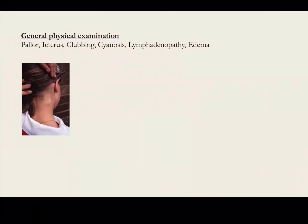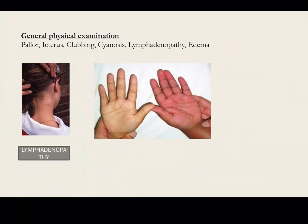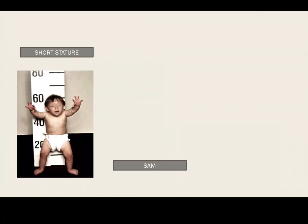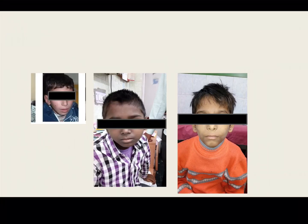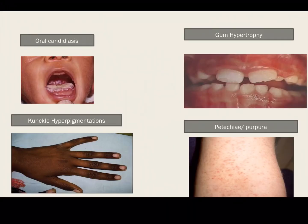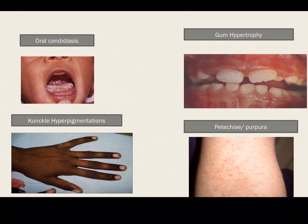On general physical examination, you can find pallor, icterus, clubbing, cyanosis, lymphadenopathy, and edema. Findings of short stature or severe acute malnutrition point towards a nutritional cause or failure to thrive due to chronic infections. Typical facial features seen in the pictures — peculiar bird face, flat facial profile, microcephaly, frontal bossing, short low hairline, webbed neck, epicanthal folds, and small eyes — are suggestive of Fanconi anemia, a type of bone marrow failure syndrome. Other pointers include oral candidiasis suggestive of HIV, gum hypertrophy suggesting leukemia, knuckle hyperpigmentation as a sign of B12 deficiency/megaloblastic anemia, and purpura and petechiae suggestive of superficial bleed due to thrombocytopenia.